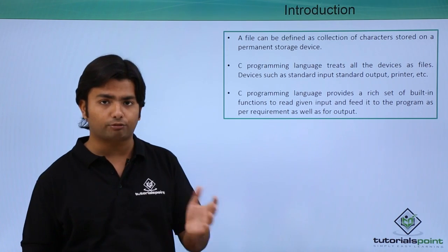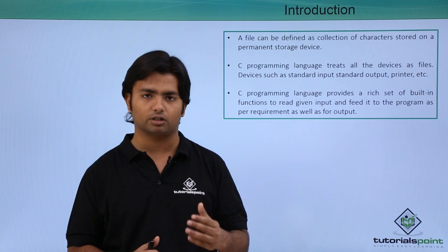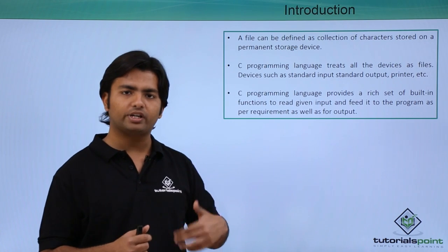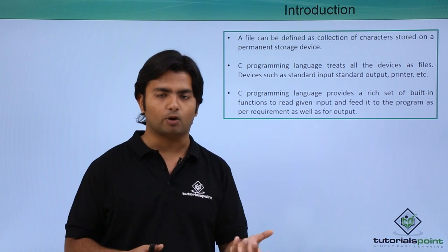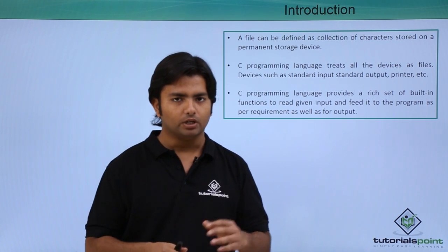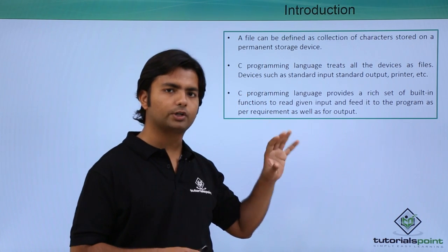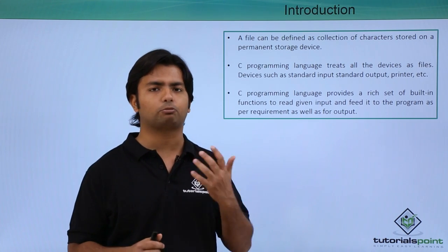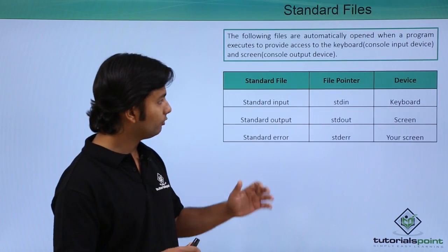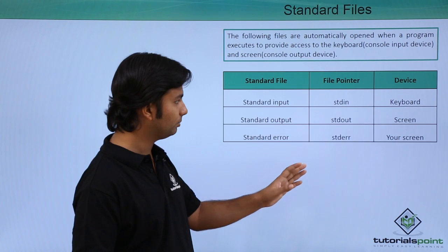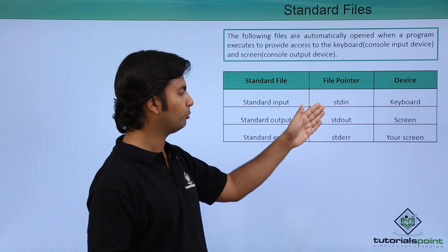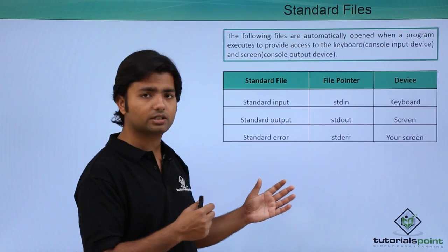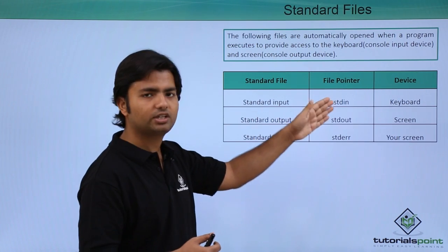We'll look at the different functions provided by the stdio.h header file and how to do data communication with files — that is, how to create a file programmatically, how to store data, how to read data from it, and so on. First, whenever we start working with C input/output, we have streams, which we can also refer to as pointers for any type of communication. There are basically three kinds of streams available: standard input stream, standard output stream, and standard error stream. Whenever you use any method for reading data from the user, it will use stdin — the major device being the keyboard.